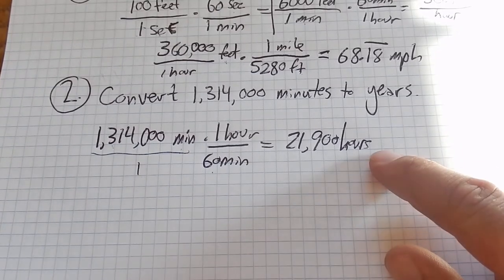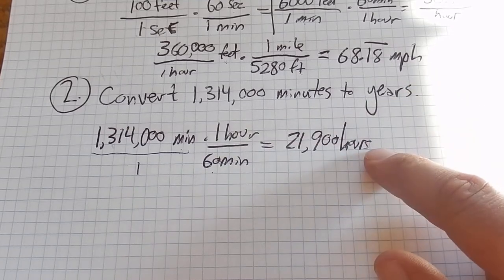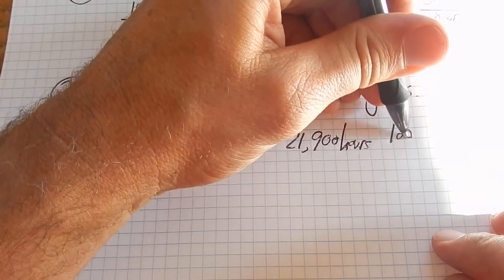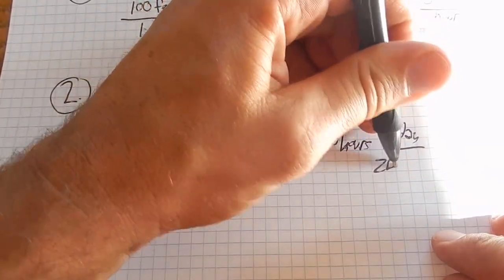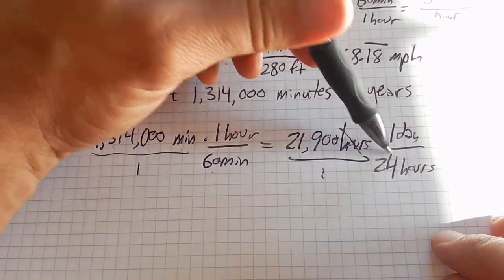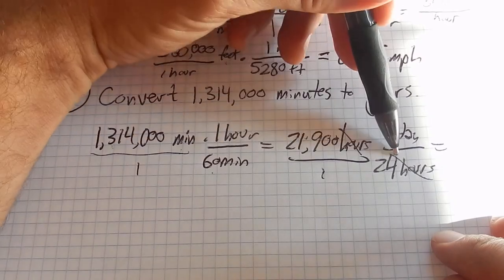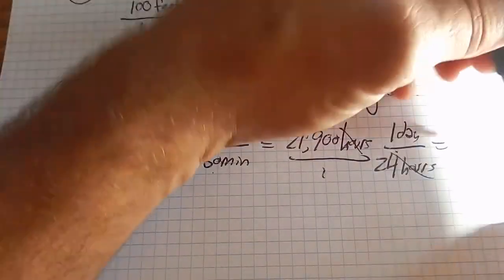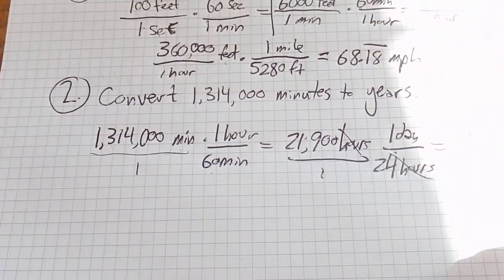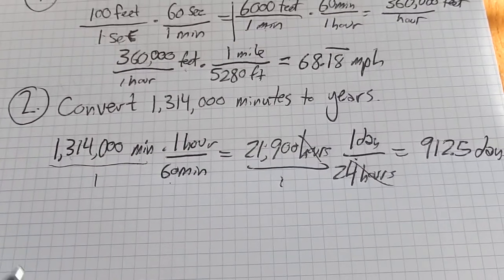And now with this, let's see, that's still big. Let's turn that into - oh, I want to get to years, so let's turn this into days. There are 24 hours in a day. My hours are gone, so now I'll be in terms of days. So this divided by 24 - I can grab my calculator. Looks like I get 912.5 days.